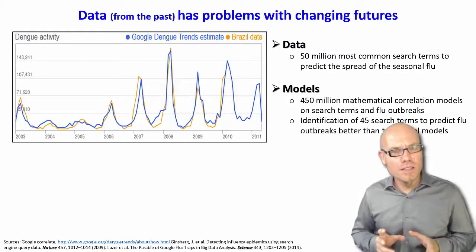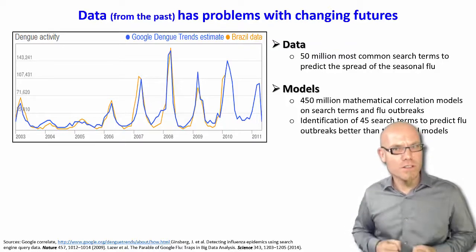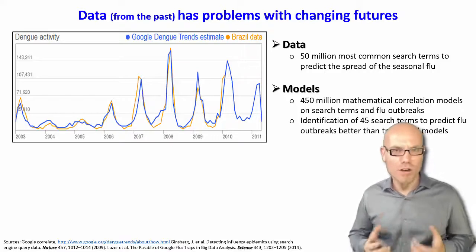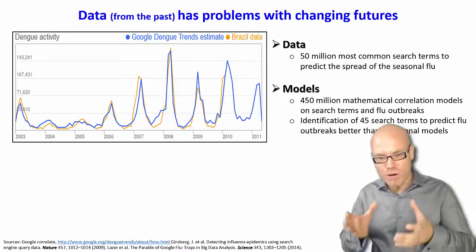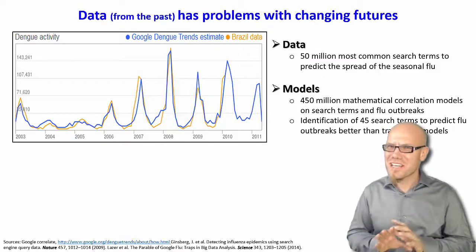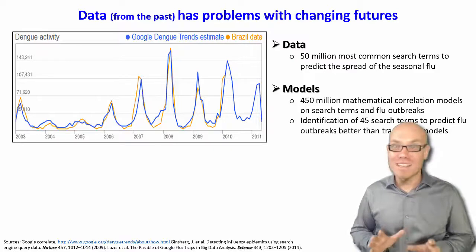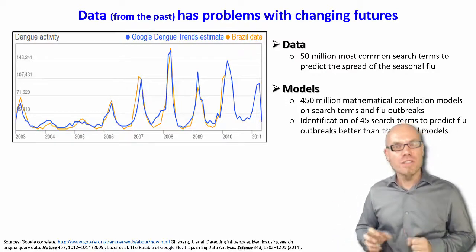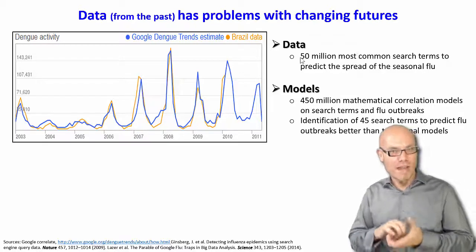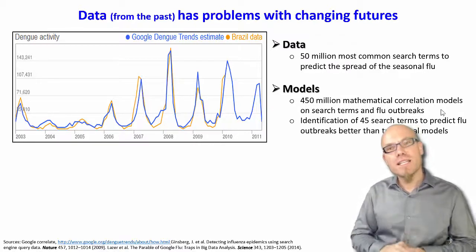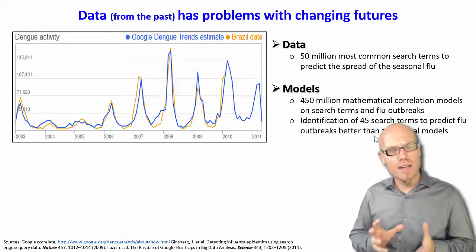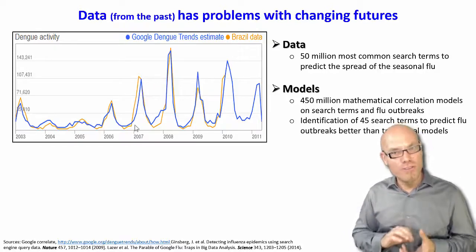The Google researchers said: let's just look at what people search on the internet and see if we can predict when and where disease spreads. Rather than using theory — like looking for searches about cough or headache — they went purely by machine learning. They ran the 50 million most common search terms and correlated them with historical flu data, running 450 million mathematical correlation models and identifying 45 search terms that highly correlated with flu outbreaks.